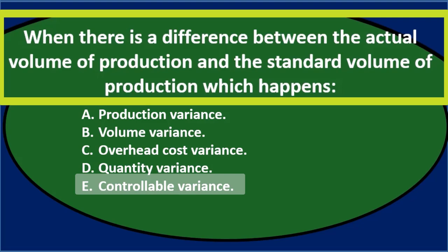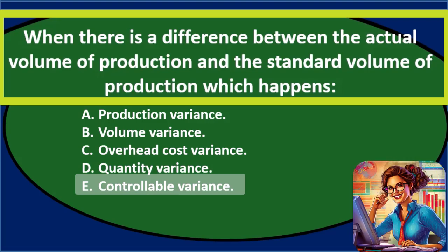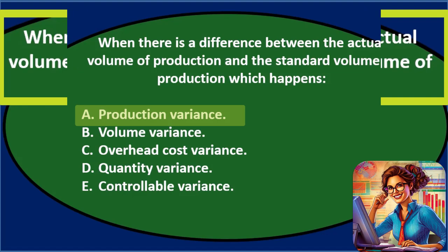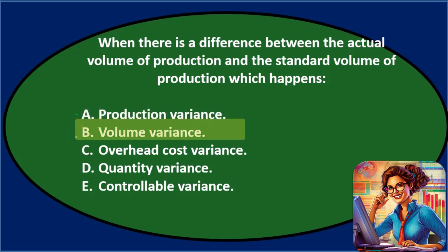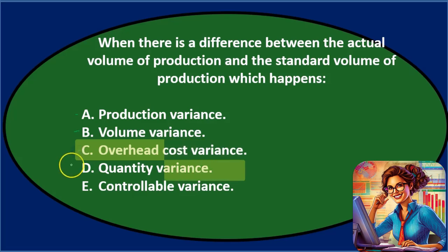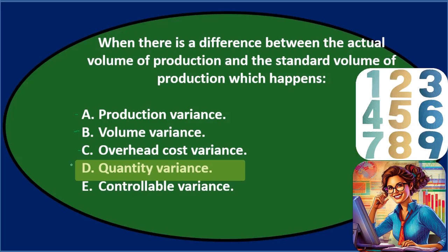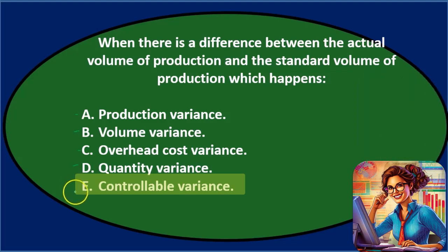Let's go through this using the process of elimination. When there's a difference between the actual volume of production and the standard volume of production, which happens? A, production variance — doesn't seem strongly related. B, volume variance — actual volume, that sounds reasonable, keep it. C, overhead cost variance — sounds kind of reasonable. D, quantity variance — volume basically is the difference in quantity, so that sounds reasonable too. E, controllable variance — crossing that one out.